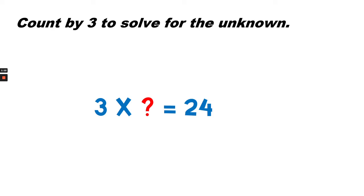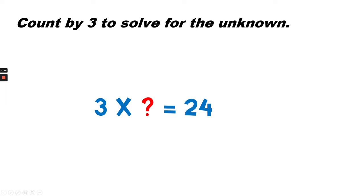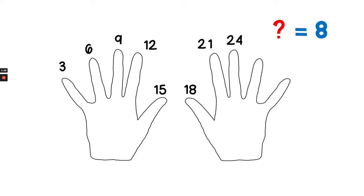We can count by 3 to solve for the unknown: 3, 6, 9, 12, 15, 18, 21, 24. We have 1, 2, 3, 4, 5, 6, 7, 8 threes. So we can say that the unknown number is 8.